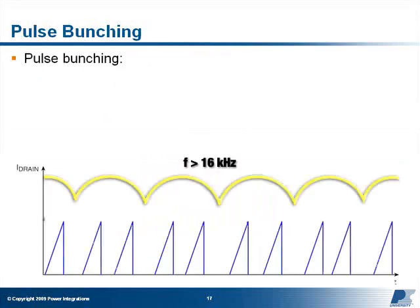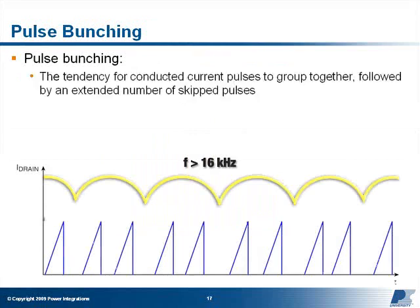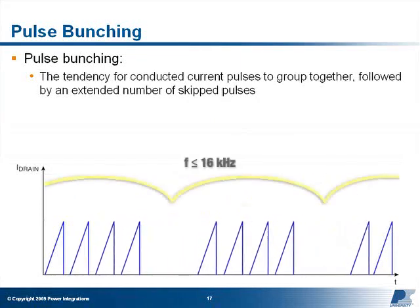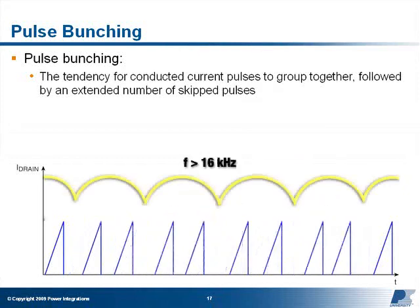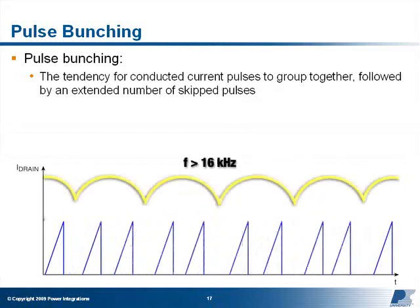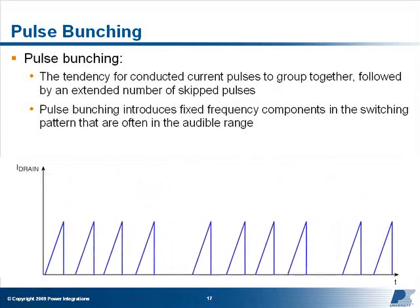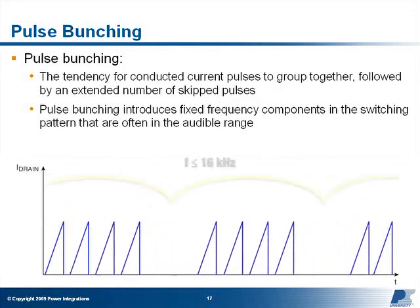Another cause of audible noise is a phenomenon known as pulse bunching. Pulse bunching refers to the tendency in some designs for the conducted current pulses to group together, followed by an extended number of skipped pulses. The grouping of pulses introduces fixed frequency components in the switching pattern that are often in the audible range.